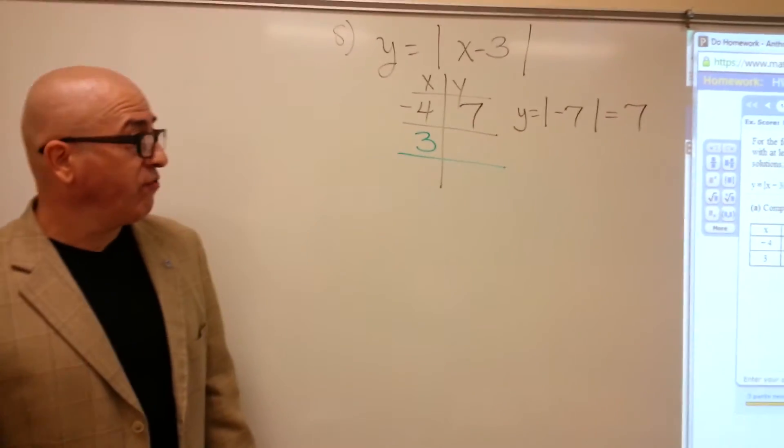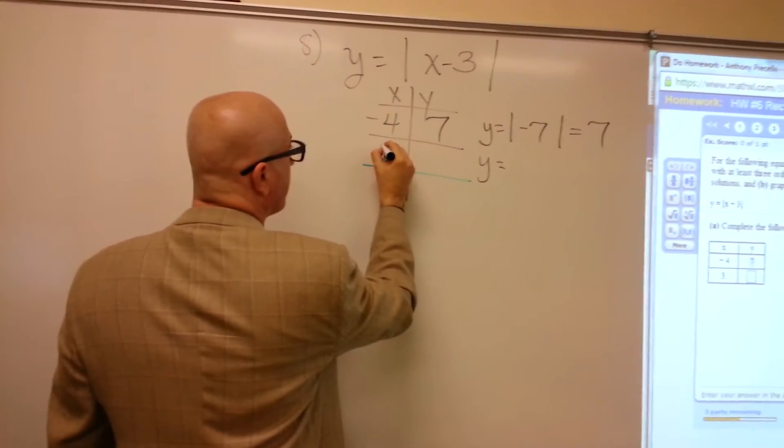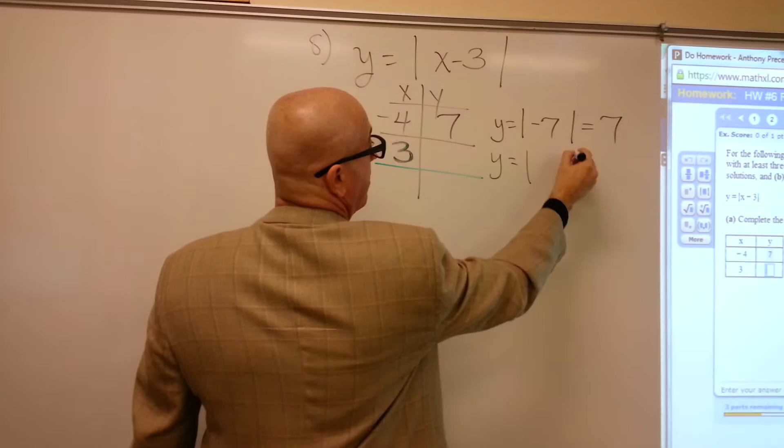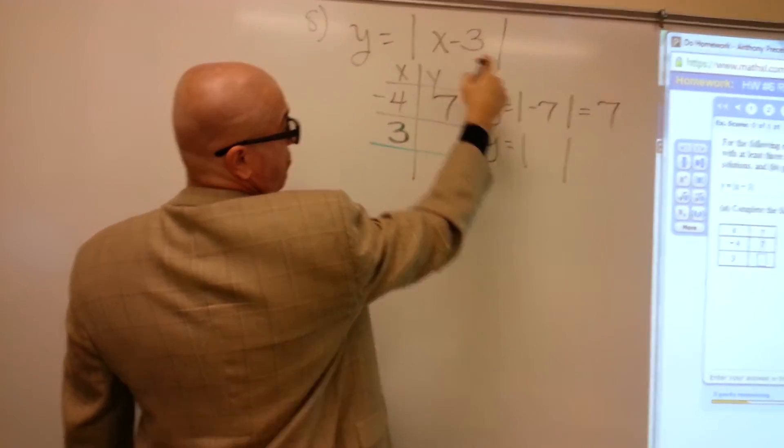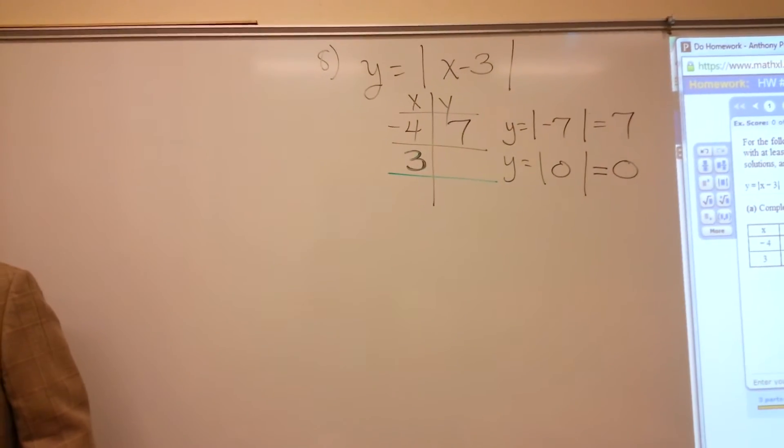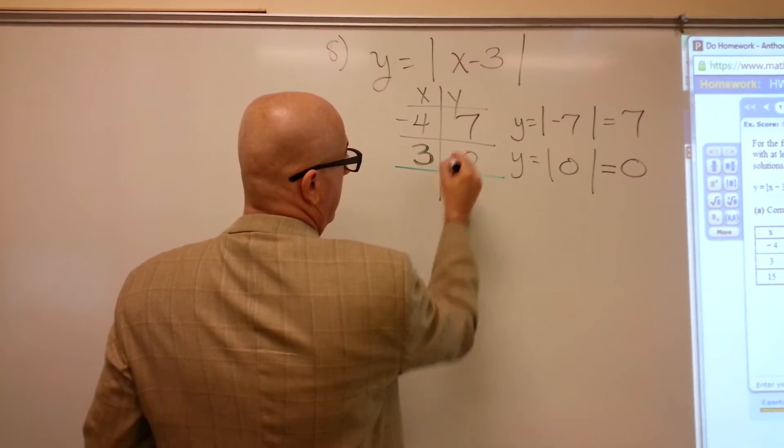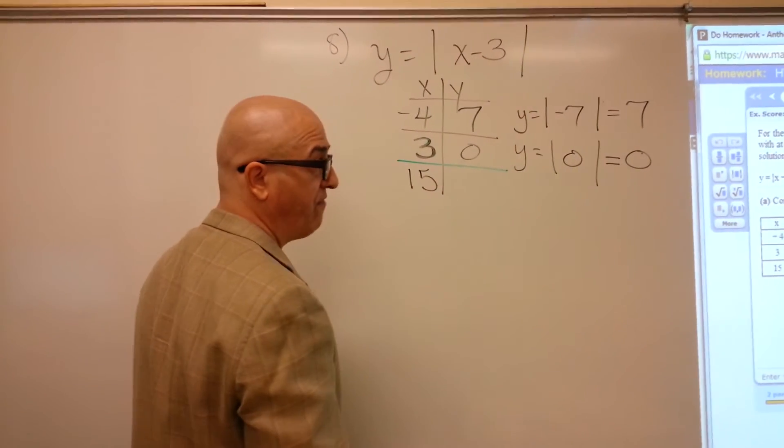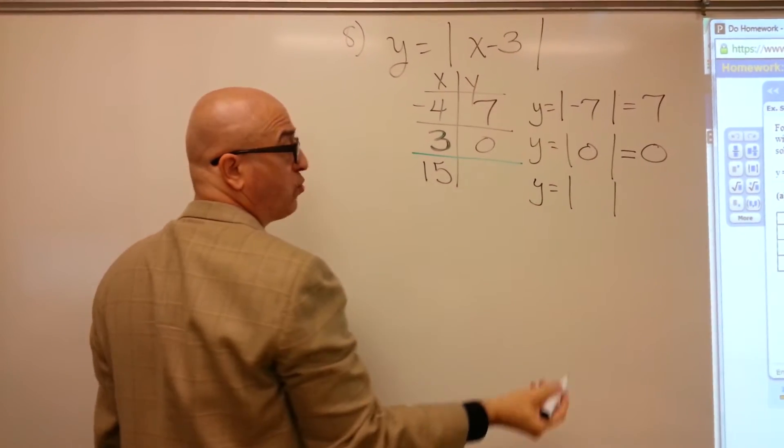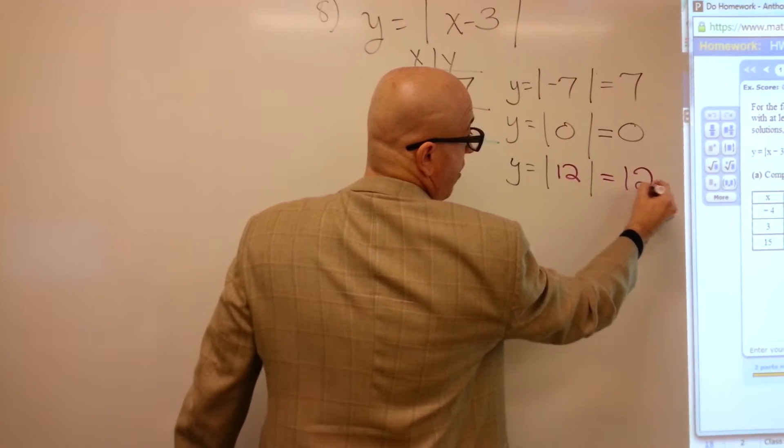Now it says plug a 3 in for x. Plug a 3. So if we plug a 3 in for x. 3 minus 3 is 0. The absolute value of 0 is 0. And now 15. Plug a 15 in for x. 15 minus 3 is 12. The absolute value of 12 is 12.